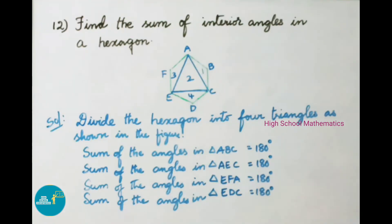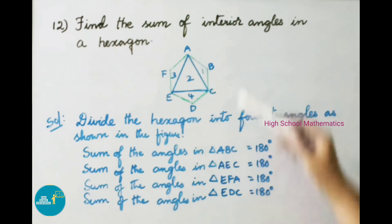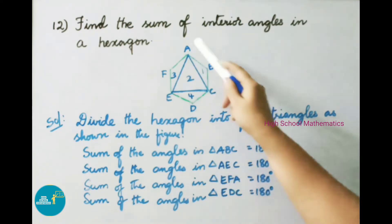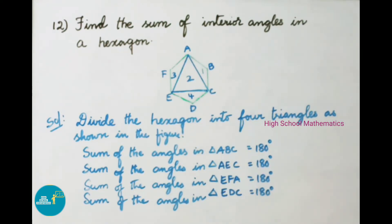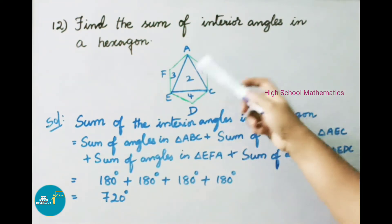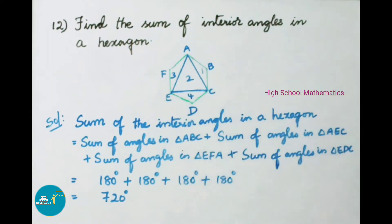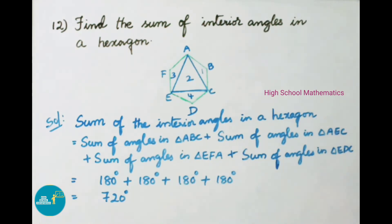Question number 12: Find the sum of interior angles in a hexagon. We divide the hexagon into 4 triangles. The sum of angles in triangle ABC is 180 degrees, in triangle AEC is 180 degrees, in triangle EFA is 180 degrees, and in triangle EDC is 180 degrees. So the sum of angles in the hexagon equals 4 times 180 degrees, which is 720 degrees.